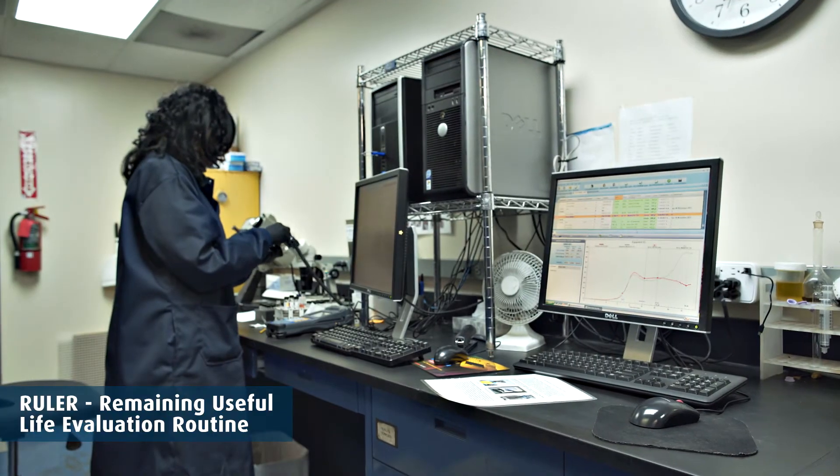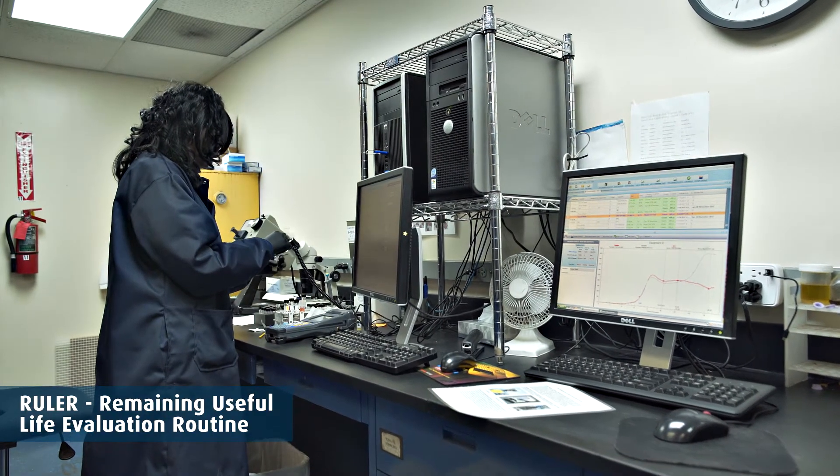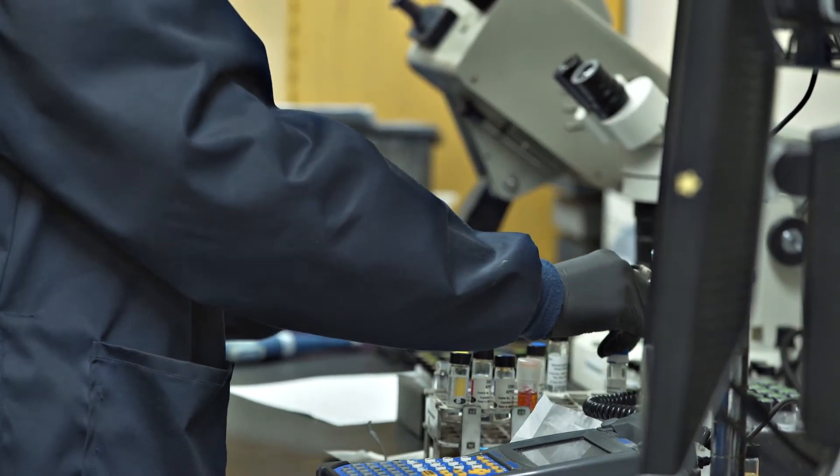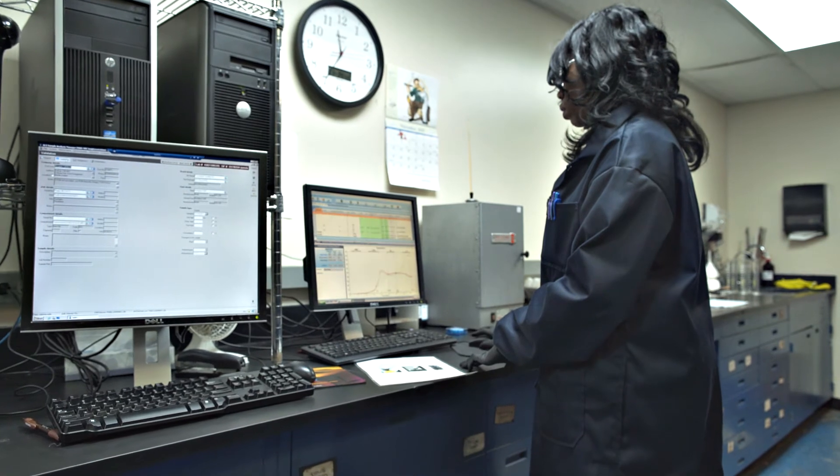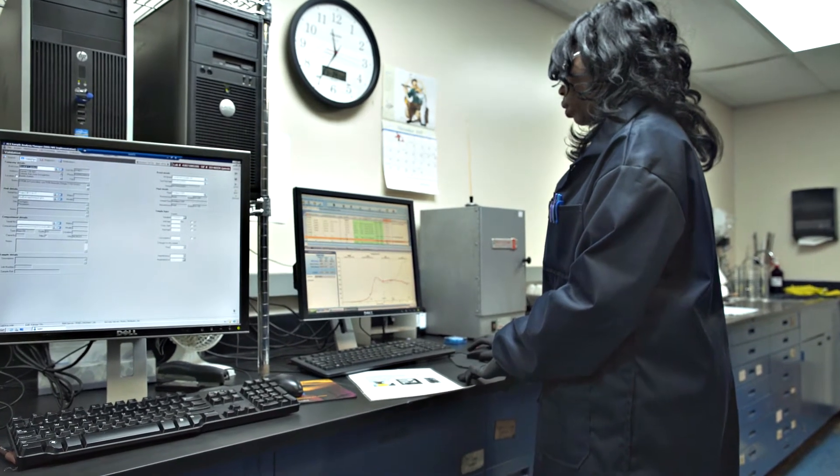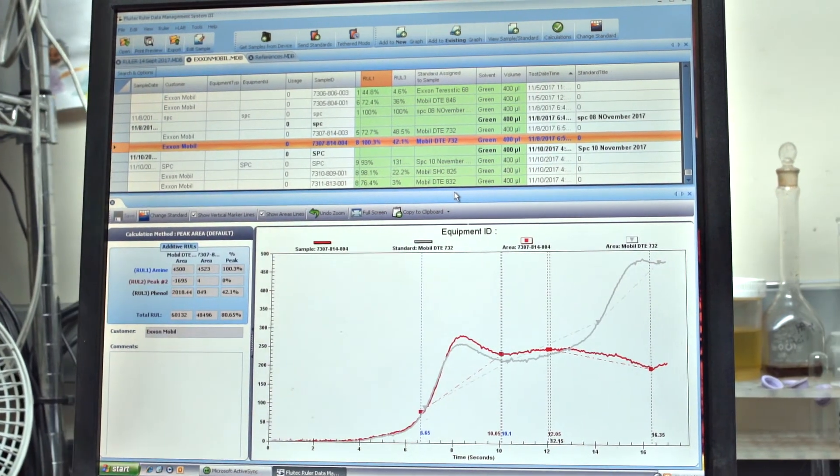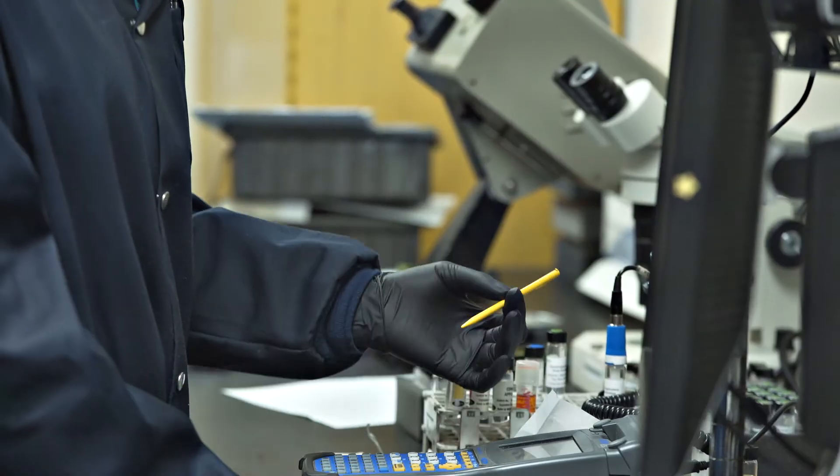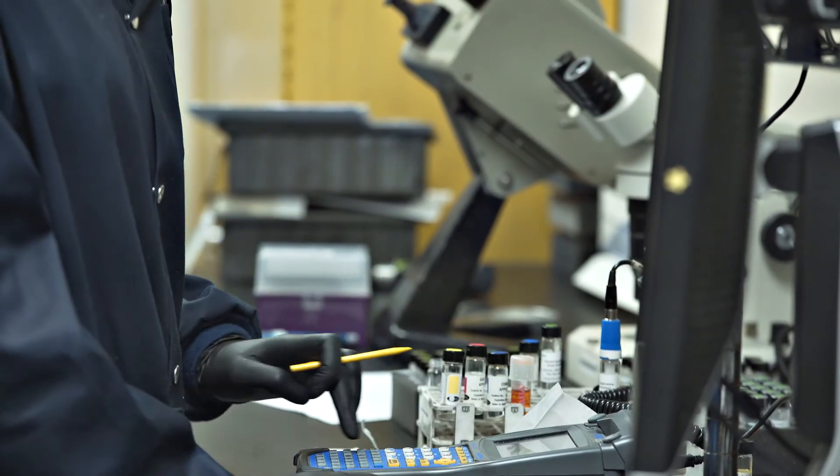RULER, remaining useful life evaluation routine. This test method measures the remaining level of active antioxidant additives in a fluid. This test can be used as a standalone test and is also a key ingredient in the test matrix ALS Tribology provides for determination of varnish potential in turbine and industrial fluids.